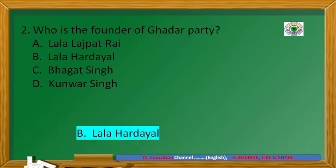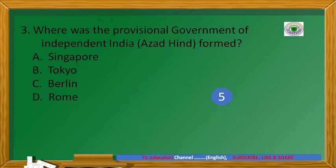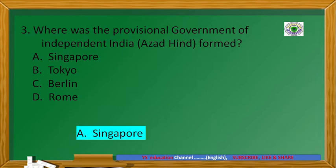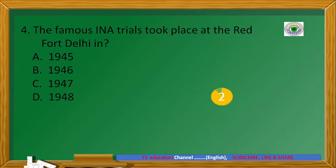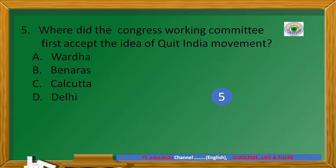Answer: Lala Hardayal. Where was the provisional government of independent India, Azad Hind, formed? Answer: Singapore. The famous INA trials took place at the Red Fort, Delhi. Answer: 1945. Where did the Congress Working Committee first accept the idea of the Quit India movement?